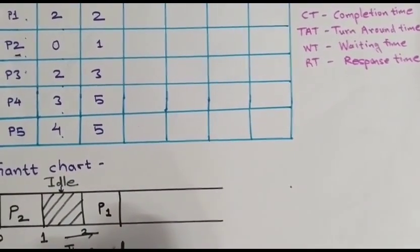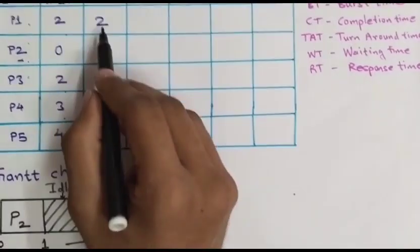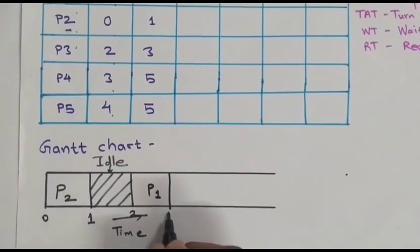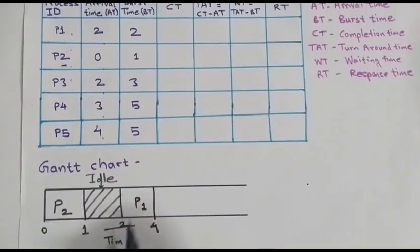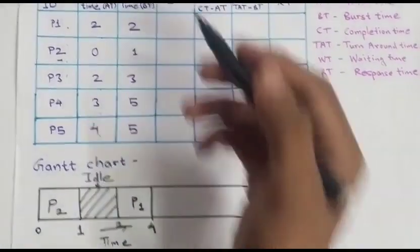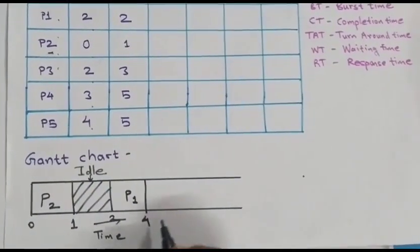And for how long time P1 requires only 2 units of time for its completion. So here time would be 4. Because at 2 P1 has been assigned to CPU it takes 2 units of time. Then 2 plus 2 is 4.